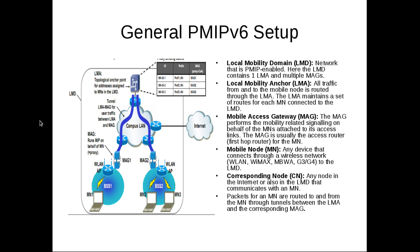Third is MAG, a Mobile Access Gateway to perform all the mobility-related signaling on behalf of mobile nodes with LMA. Fourth is MN, a mobile node, a device which connects to the network through its interfaces like Wi-Fi, 3G, 4G.